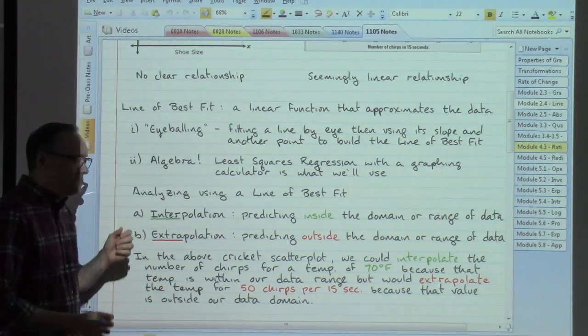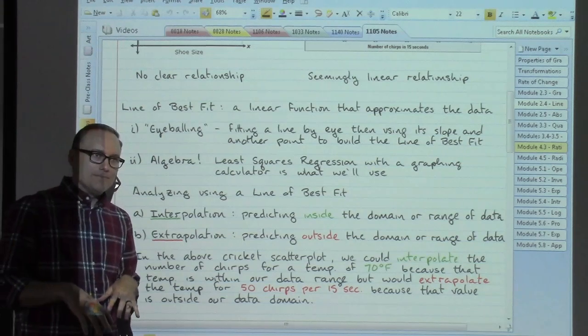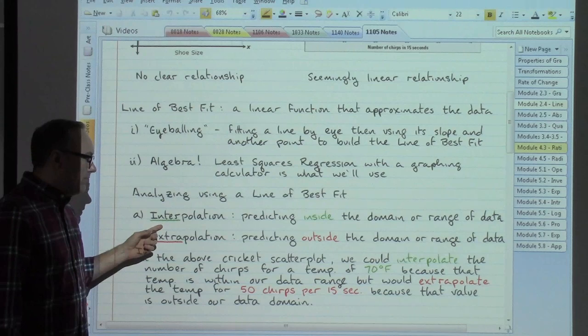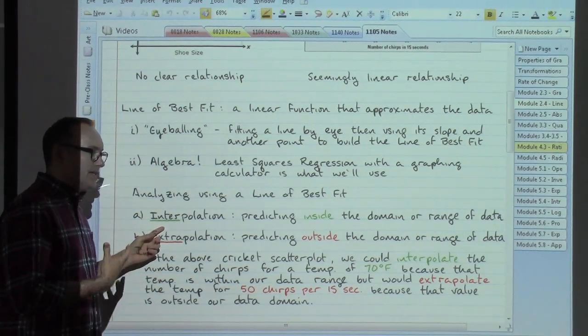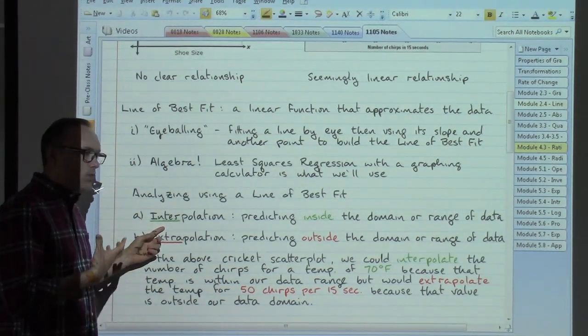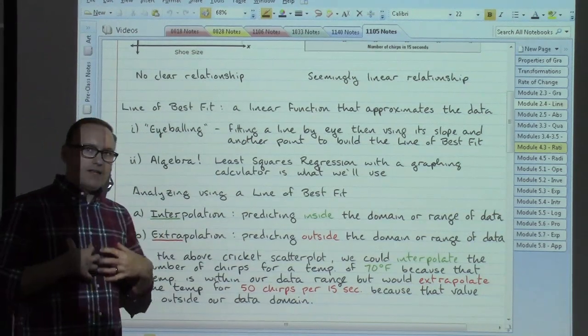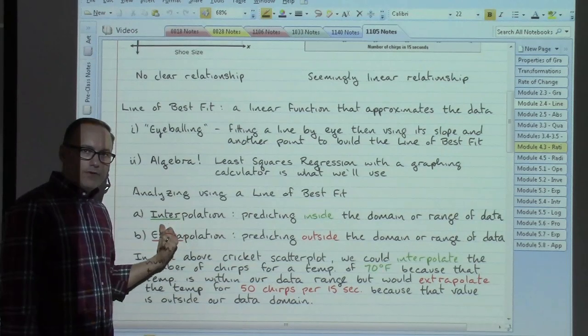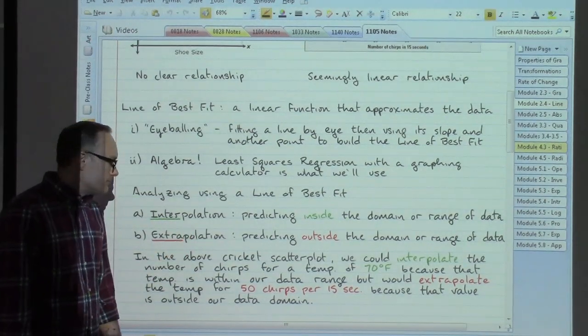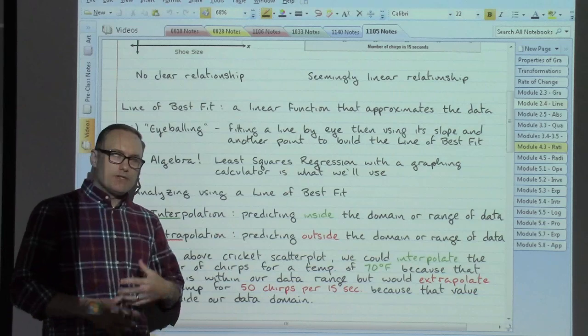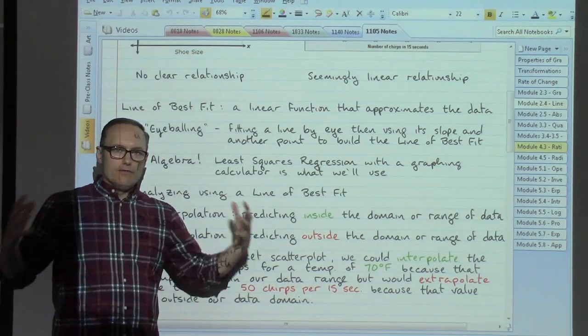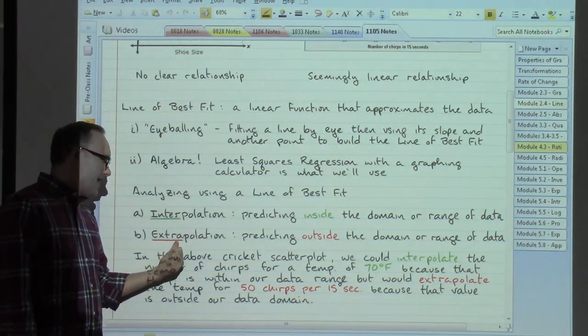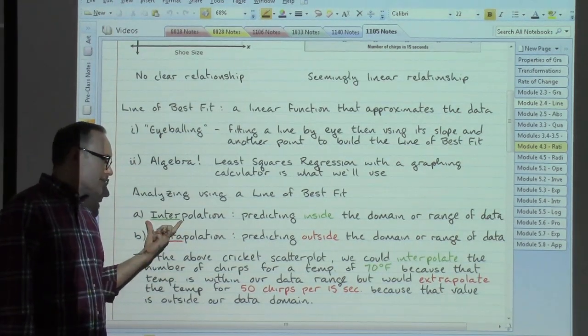About that line of best fit, how we can use it. If we are looking at predicting something that is happening within the domain or range of the data that we've collected, that is inside, so we would refer to this as interpolation. If, however, we were wanting to predict something that's happening outside of that domain or range of data that we've collected, we would call that extrapolation. Outside versus inside.